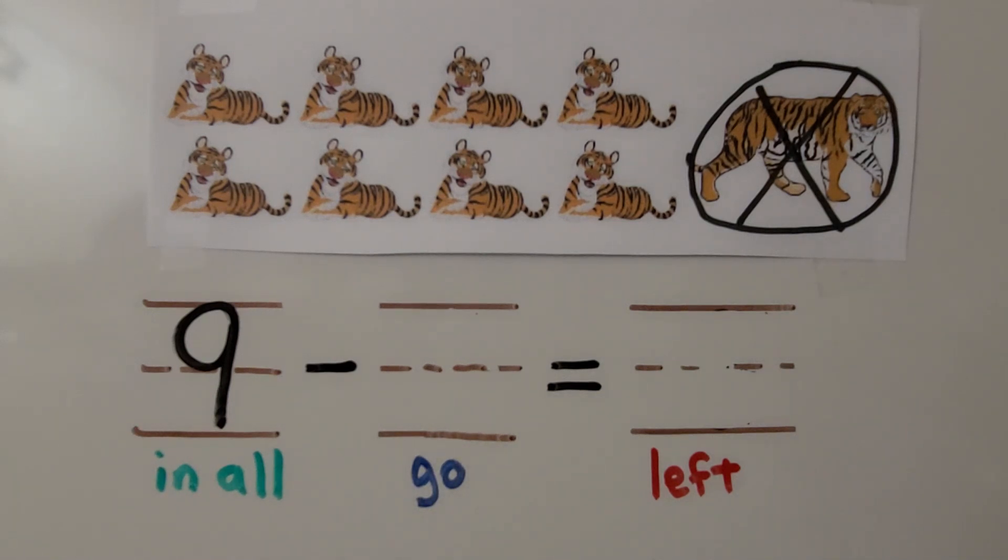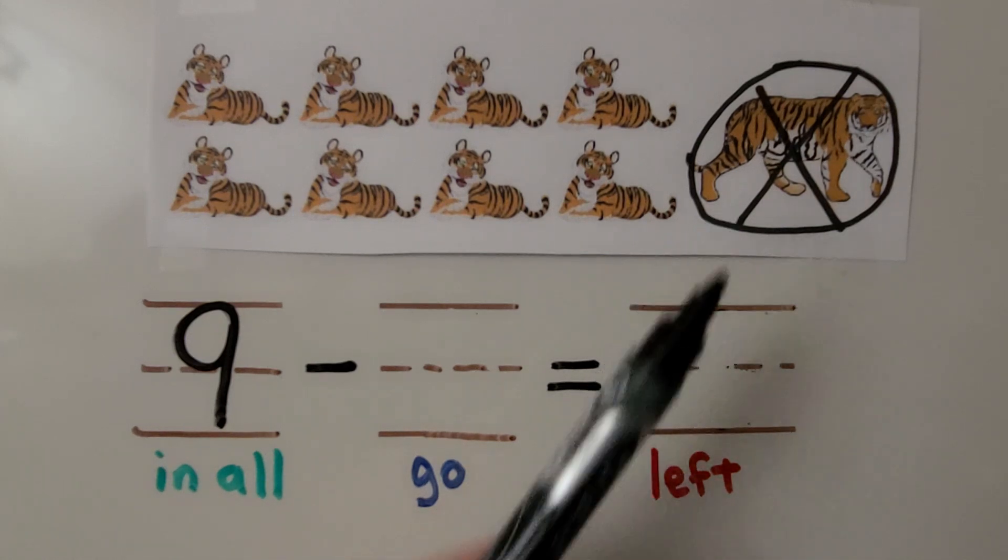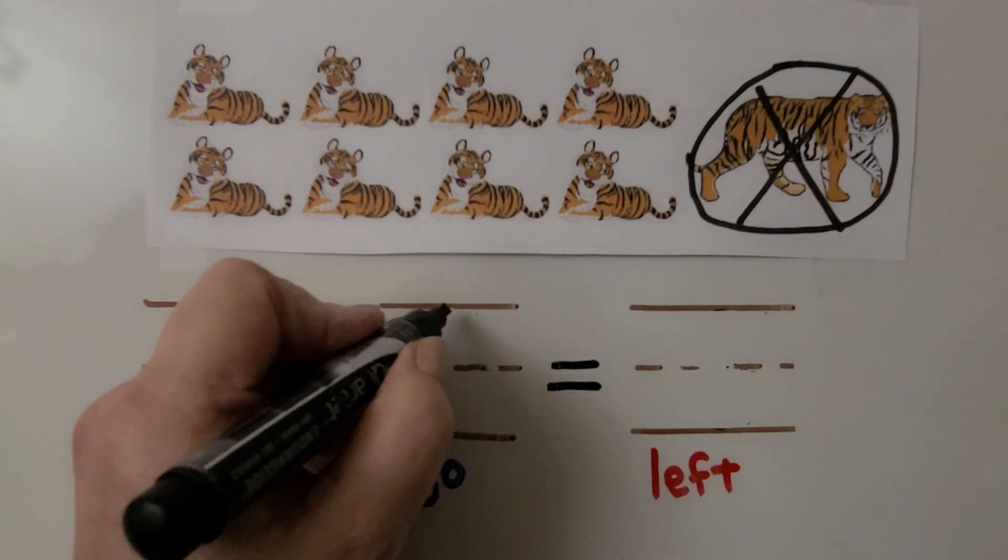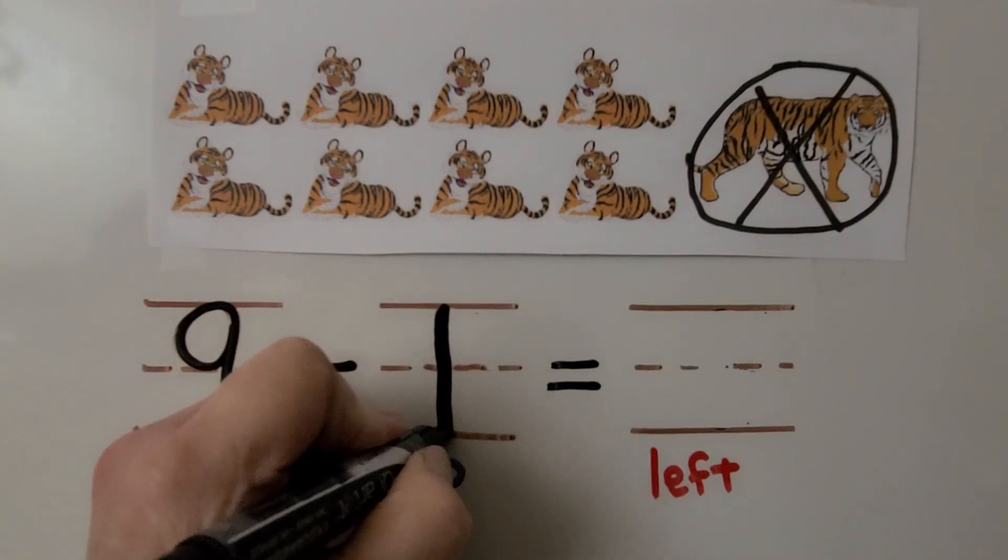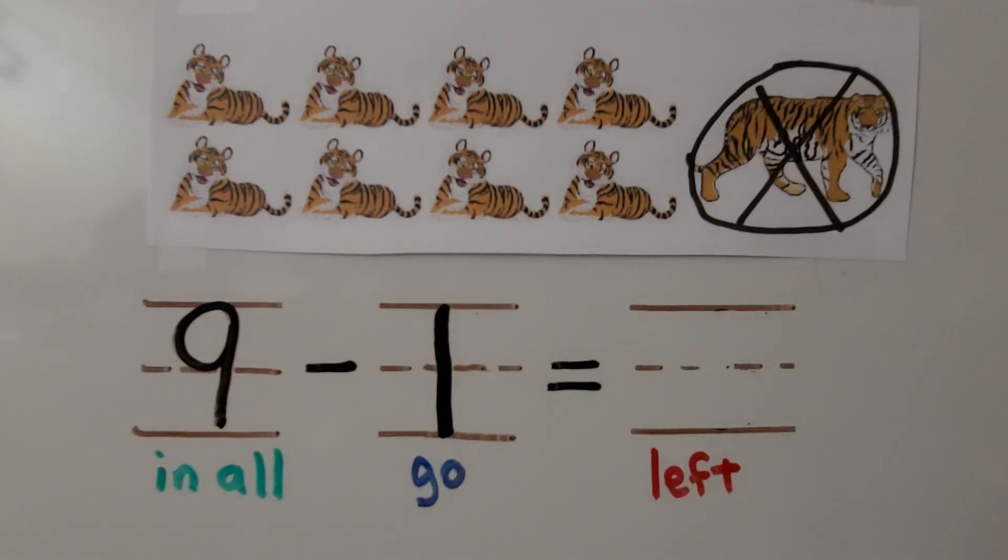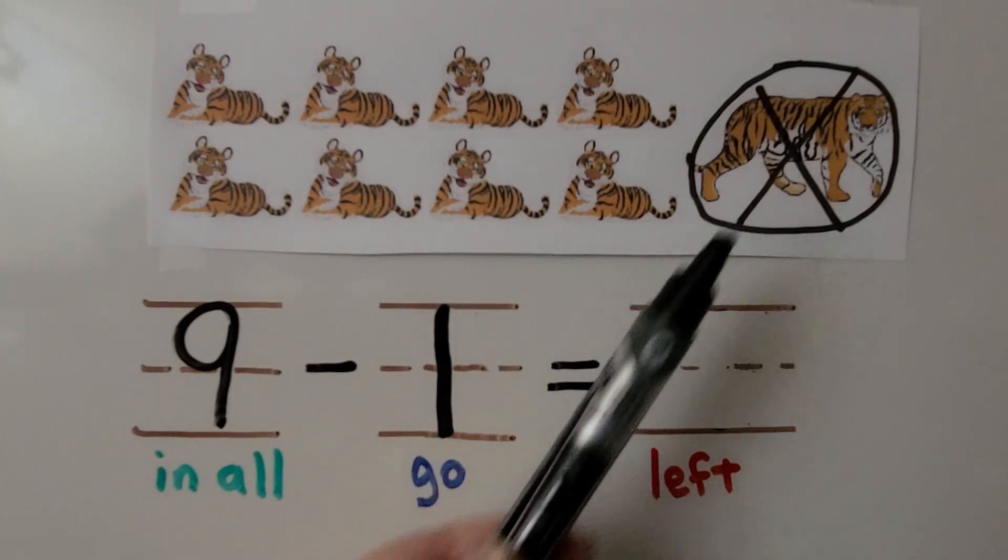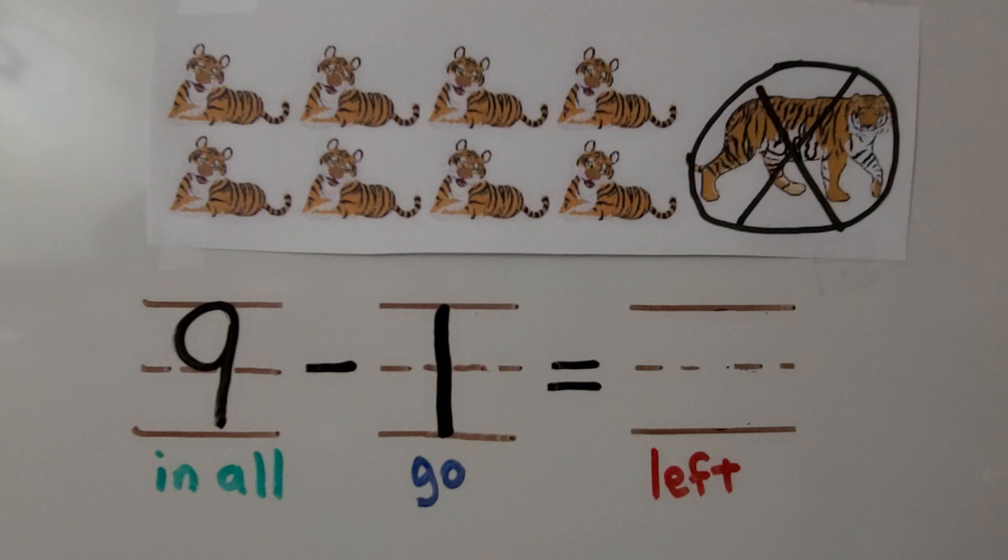How many tigers are taken from the set? Do you know? We can see that one is circled and crossed out. We can write one. There's one that is taken from the set because it's circled and crossed out. How many tigers are left? There's nine tigers in all. One is being taken from the set. Do you know how many tigers are left?